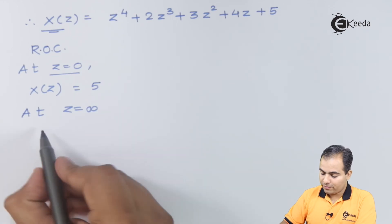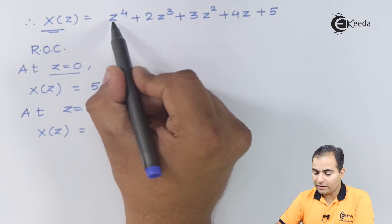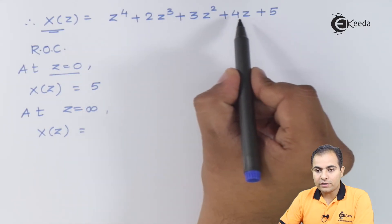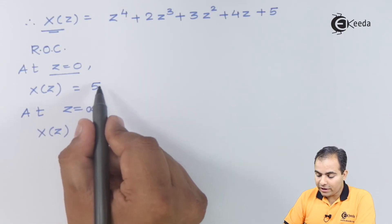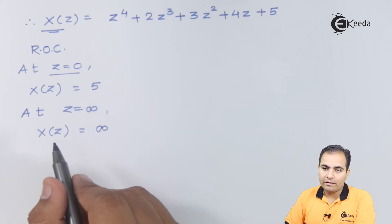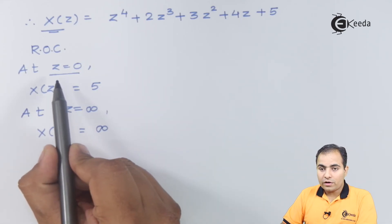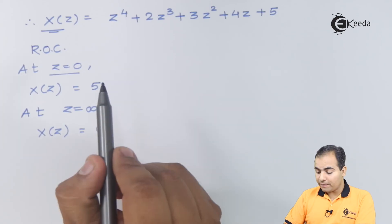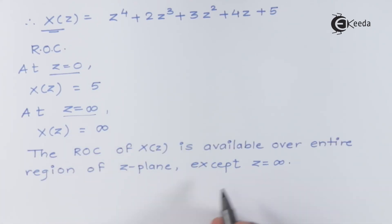At z equals infinity, replacing all z by infinity gives infinity raised to four, which is infinity — an infinite result. So at z equals zero we get a finite value, whereas at z equals infinity we get an infinite value. Therefore, the ROC of X(z) is available over the entire region of the Z-plane, except z equals infinity.